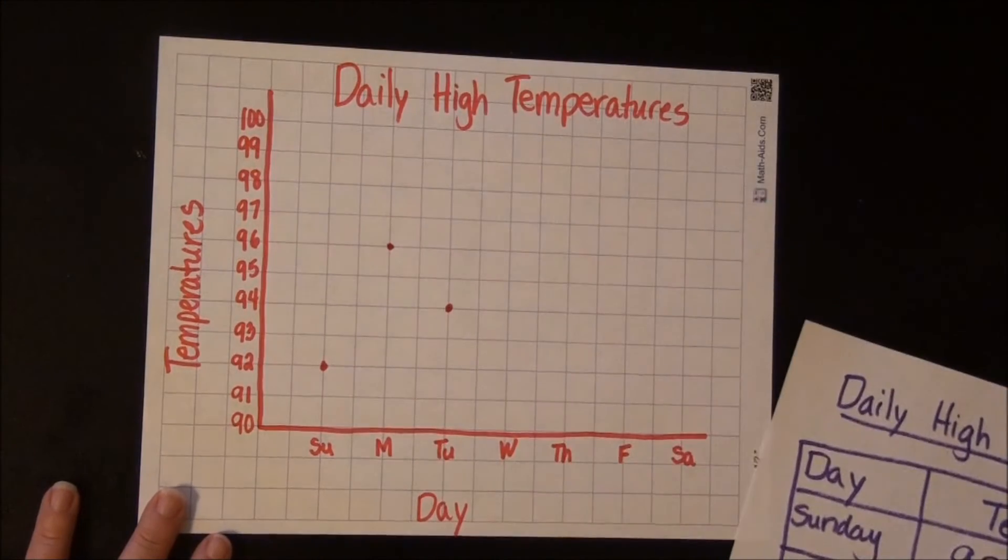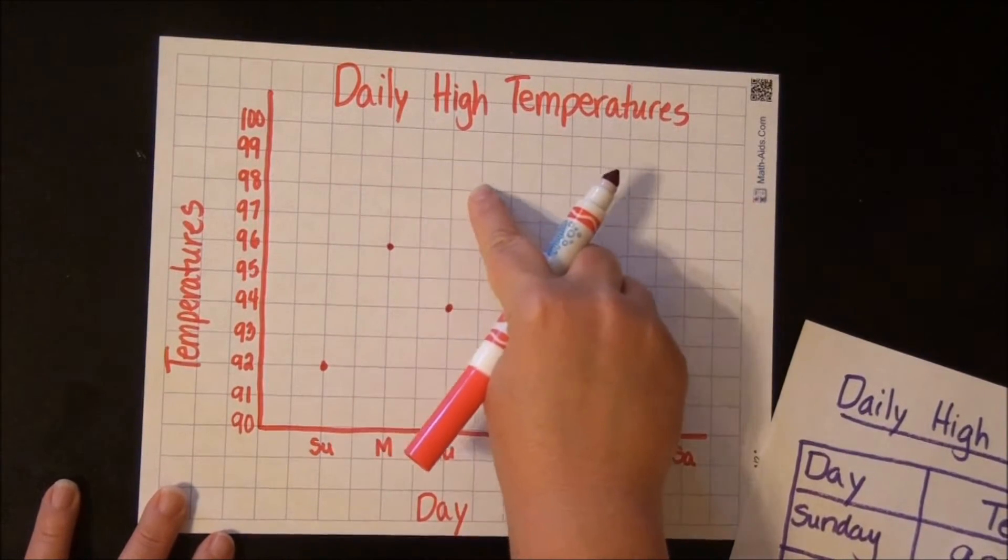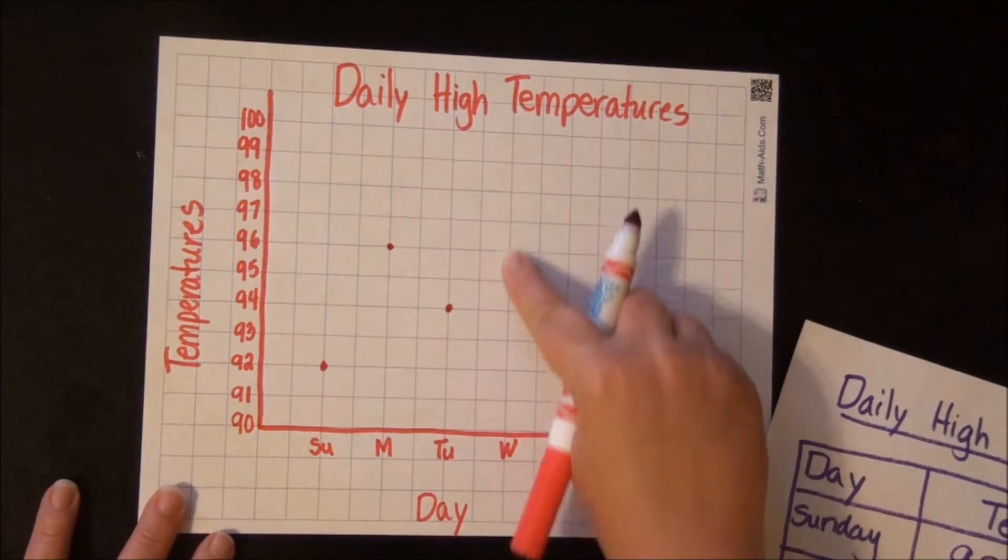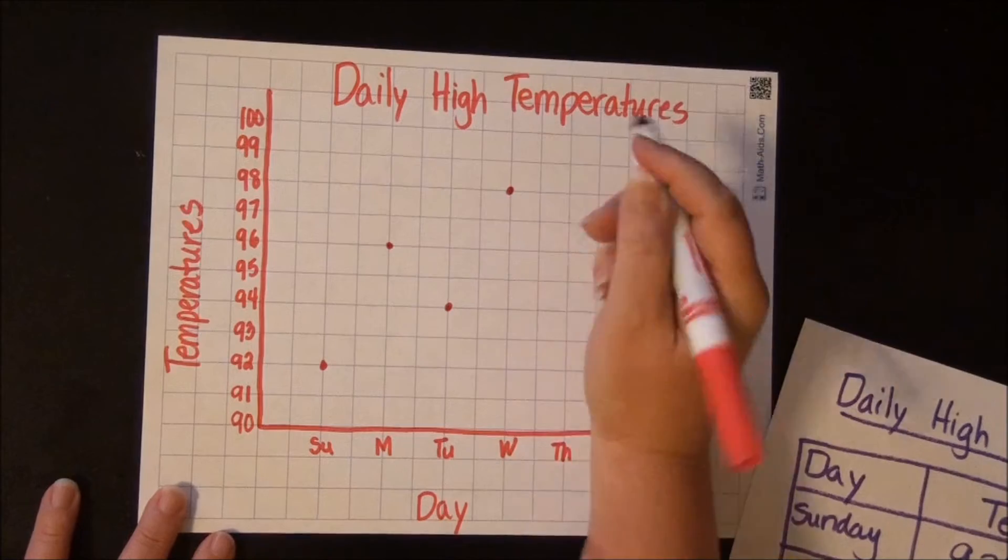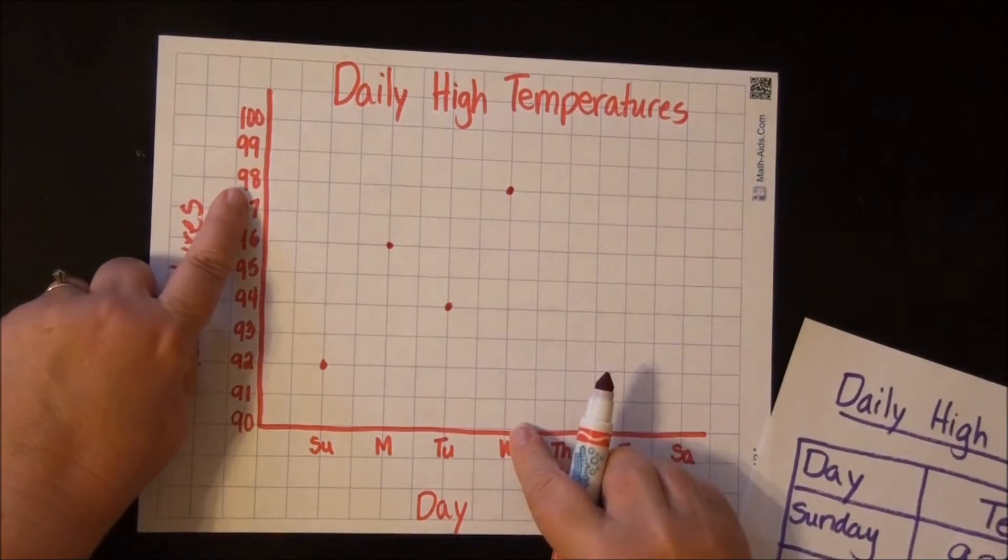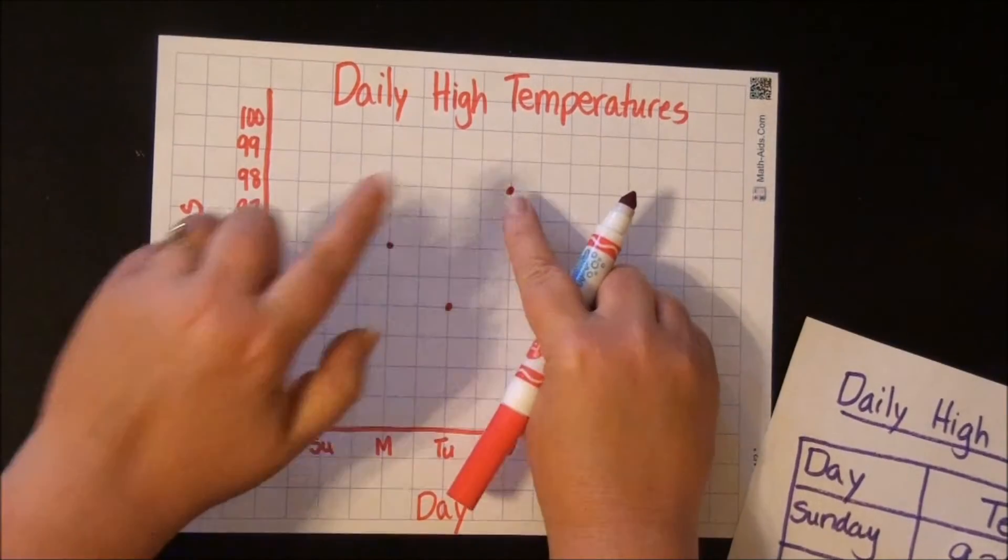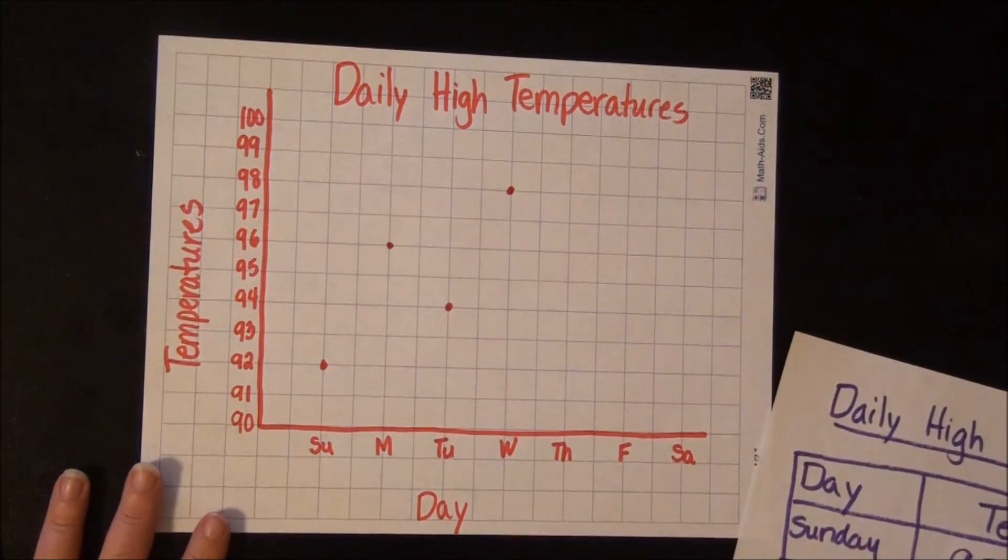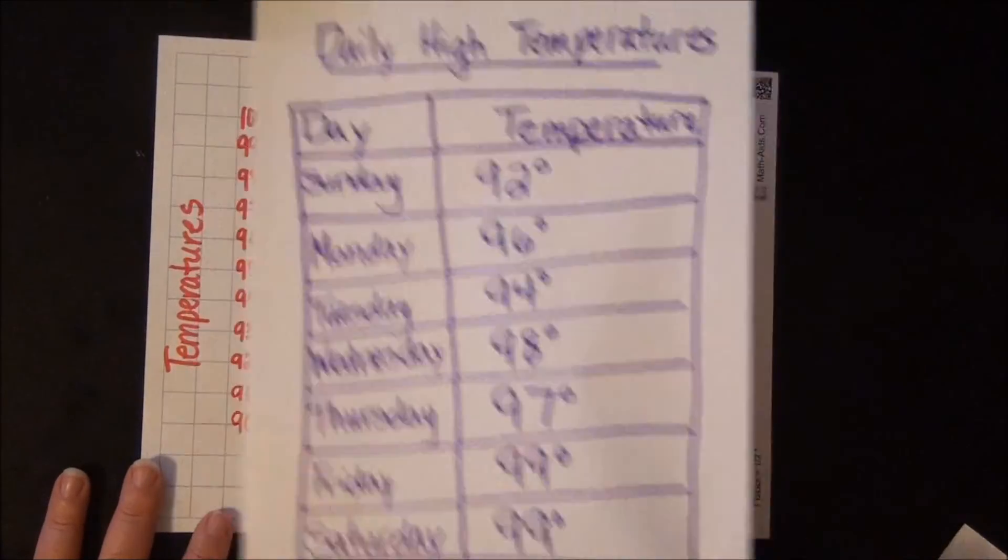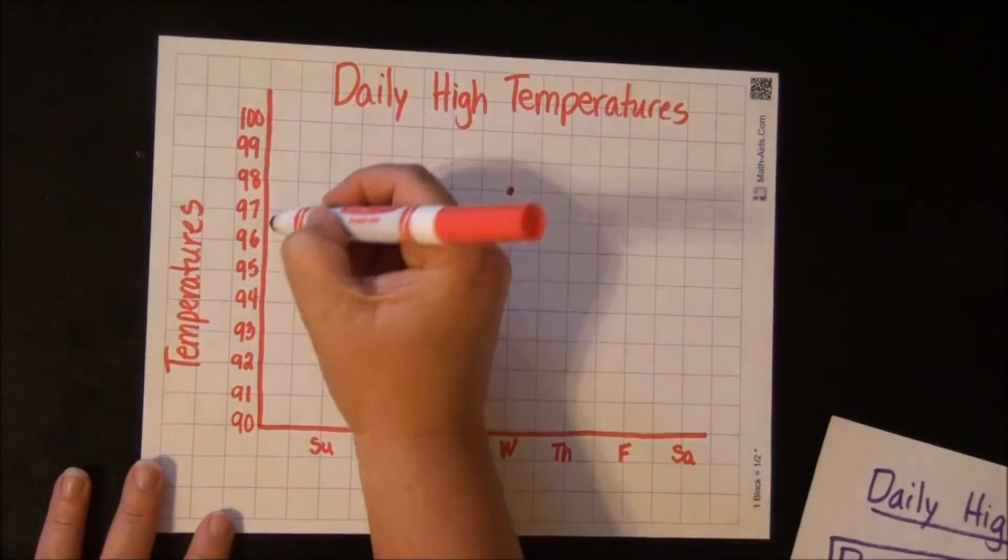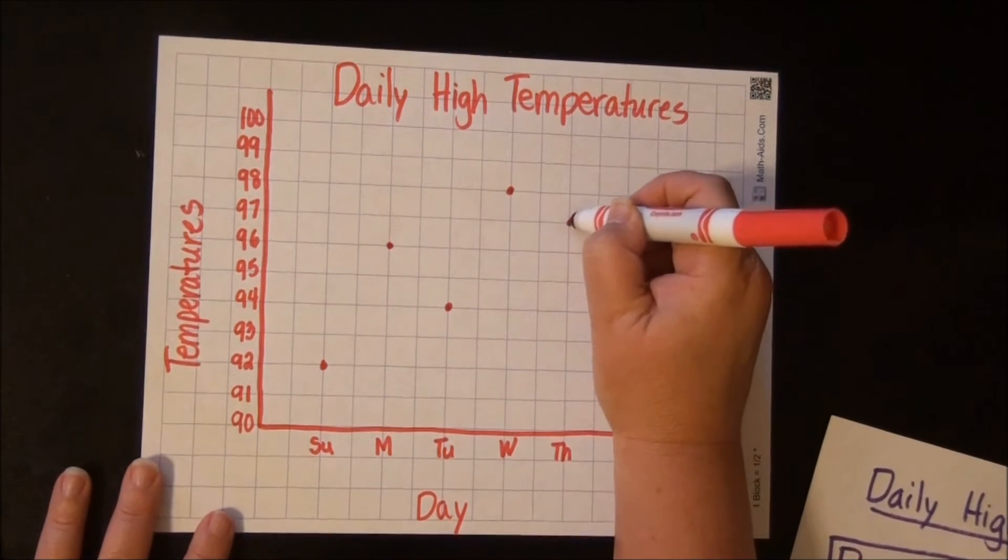Wednesday was 98. Go up to 98, over to Wednesday. See, this is the line with Wednesday on it. If you want to use two hands, you can. You can do 98 and Wednesday, slide over and slide up and where they meet, if that works better for you. Thursday was 97. So we're going to go up to 97, go over to Thursday and draw our dot.